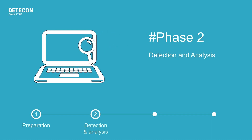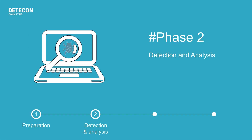In this phase, the focus is on detecting and analysing security incidents. Monitoring and detection systems are deployed to identify potential indicators of compromise and anomalous activities. Once an incident is detected, it is analysed to understand the nature and scope of the incident. This includes determining the extent of the compromise, the potential impact on systems and data, and identifying the attacker's tactics, techniques and procedures.